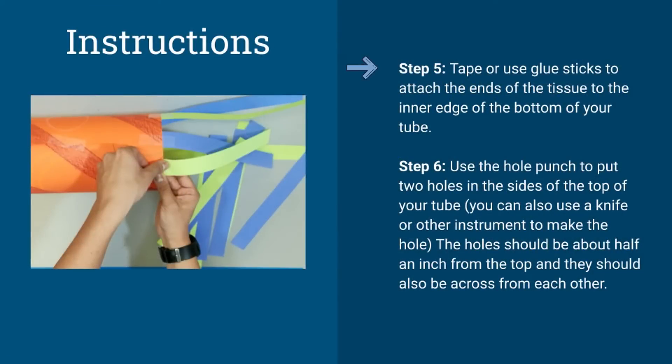Step five. Tape or use glue sticks to attach the ends of the tissue to the inner edge of the bottom of your tube.